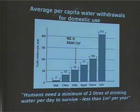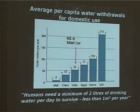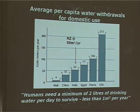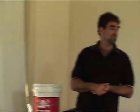Where are we at in New Zealand, comparing some other countries? The USA are the largest gross water users for domestic use — 215 cubic metres per person per year. I'm not sure that everybody in America has a swimming pool, but you start to wonder. France, Egypt, India — we're comparable with India. However, what we actually need is a minimum of two litres a day for sustaining life, and anything over that is just added quality of life.